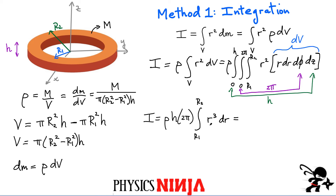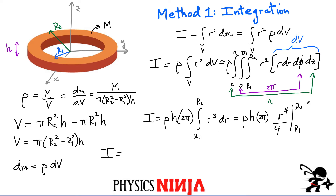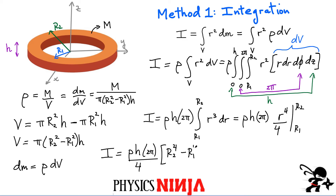We're actually almost done. This is a simple function — very easy to integrate. We're left with ρ · h · 2π, and the integral of r³ is r⁴/4 evaluated between the limits r1 and r2. Substituting the limits gives the density times h times 2π over 4, times [r2⁴ − r1⁴].